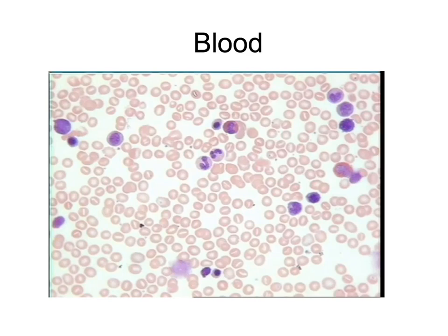In general, blood has a pH of 7.4 and it makes up about 8% of the body weight, averaging out to 4 to 6 liters per person. The liquid portion of the blood is the blood plasma, which is about 50% of the total volume of blood, and the plasma is 97% water.